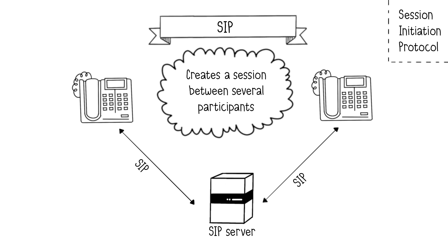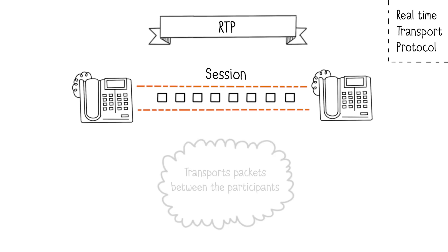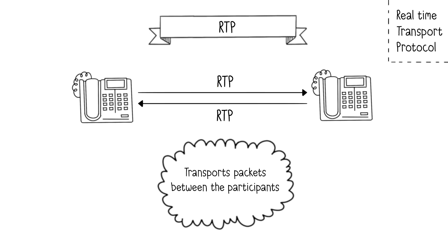However, SIP doesn't transport any voice between devices — it's similar to HTTP, with textual exchanges between server and clients. It is the Real-Time Transport Protocol, or RTP, that transports packets between devices in the session. RTP is designed to transport payload data, including voice and video. Note that an RTP stream is unidirectional; for duplex transmission, an additional RTP stream must be launched in the opposite direction.